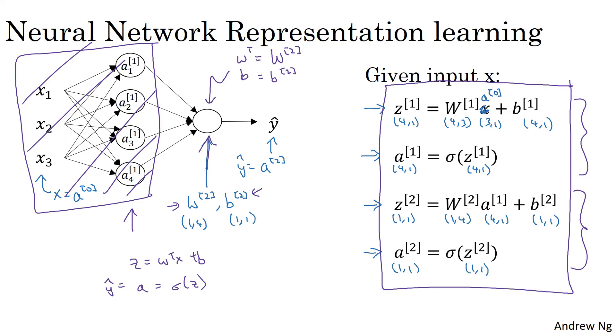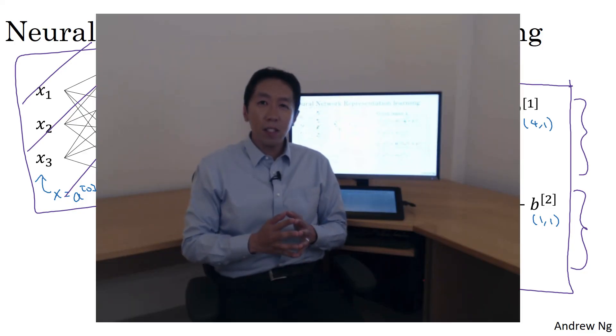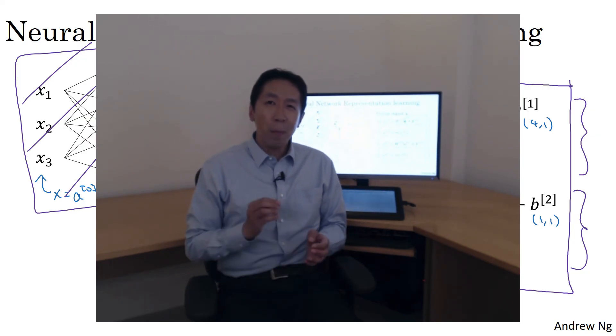I hope this description made sense. But the takeaway is to compute the output of this neural network, all you need is those four lines of code. So now you've seen how given a single input feature vector x, you can with four lines of code compute the outputs of this neural network.